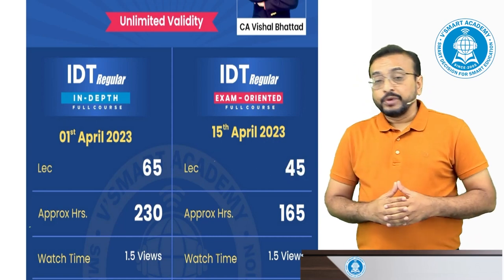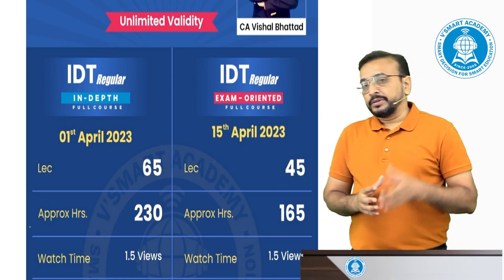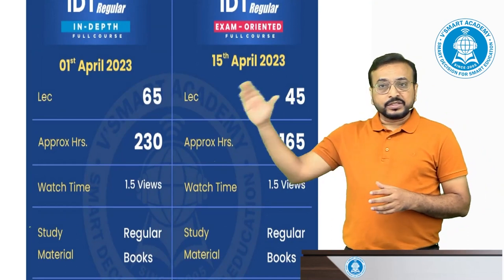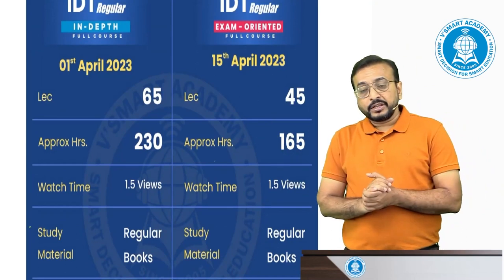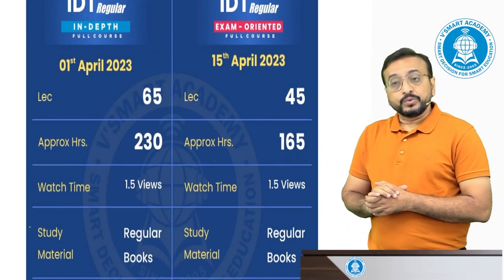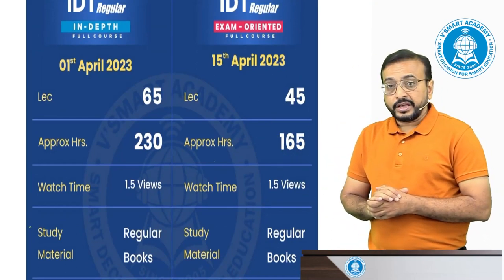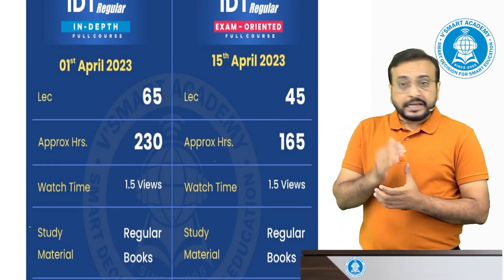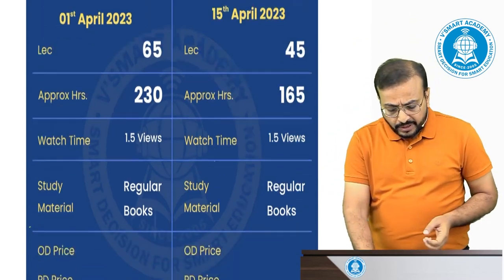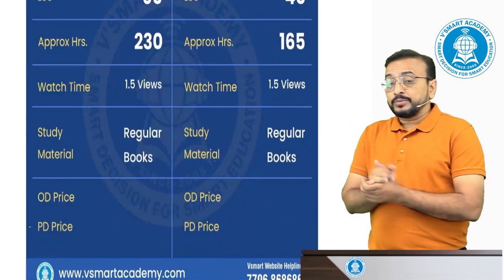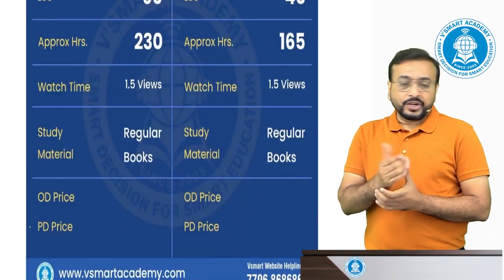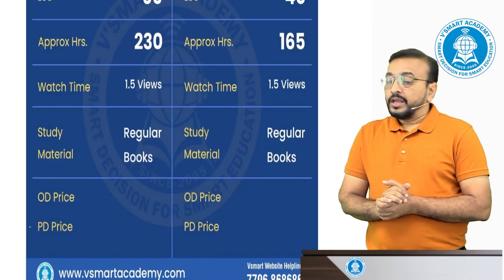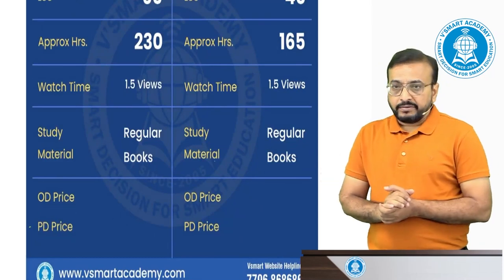First, I will give you the bullet points. In the IDT Regular In-depth Full Course, there are a total of 65 lectures, approximately 230 hours. Watch time is 1.5 times. Validity is unlimited. Study material includes regular books, regular modules, questionnaires, chart books, and wall charts. Prices will be available on the website.